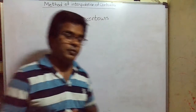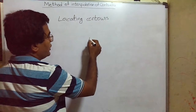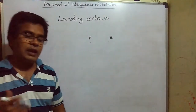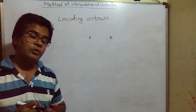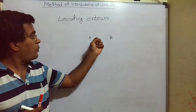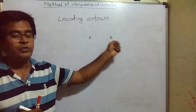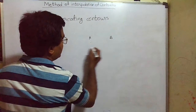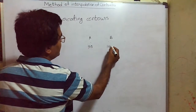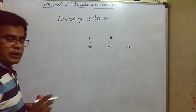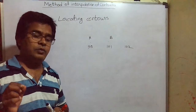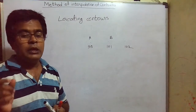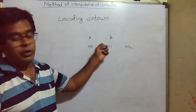Plotted points means suppose we have plotted some points — there is a point A, there is a point B — of which we have found out the RL in the last lecture. We used indirect methods of contouring to find the RL of random points on the ground. Suppose point A has RL 99, B has RL 101, C has RL 102. Now we have to locate a desired contour, say RL 100. So we need to find out the points in between these random points where RL is 100.